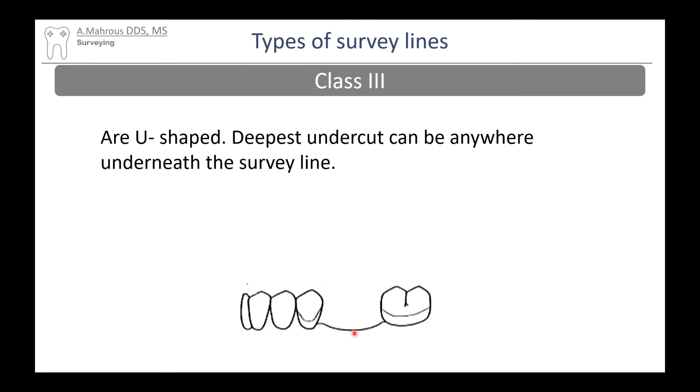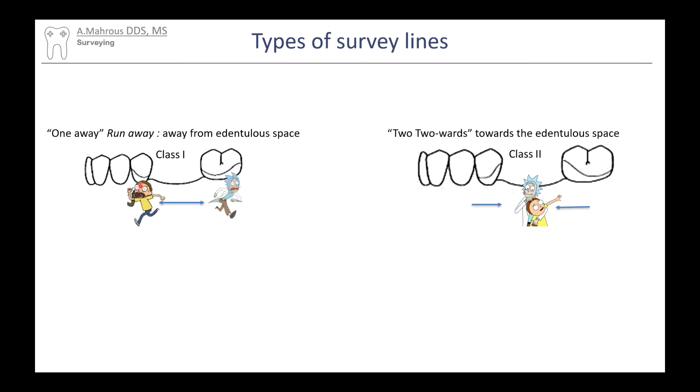A nice way to memorize this is to use the 1 away run away to indicate that the undercuts are away from the edentulous space, and 2 towards, meaning the undercuts are close to the edentulous space.